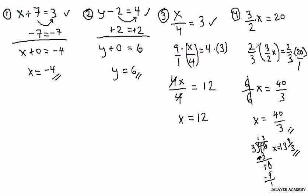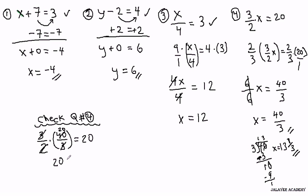Now, if we were to plug in 40 over 3 in place of our x, we could do that over here. Check question number 4. We get 3 halves times 40 over 3, we're putting in place of our x, equals 20. Now we can cross out, simplify our multiplication. There's one 2 there, and there are 20 2s there. So we're left with just 20 equals 20.